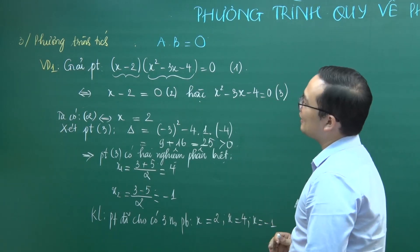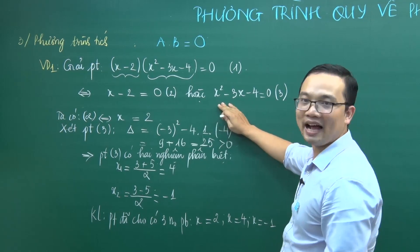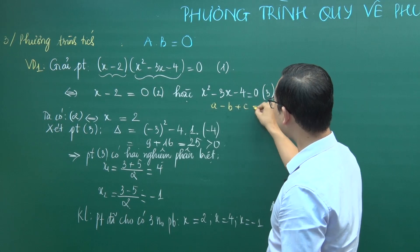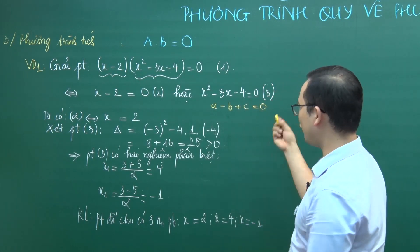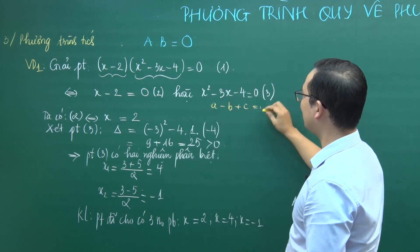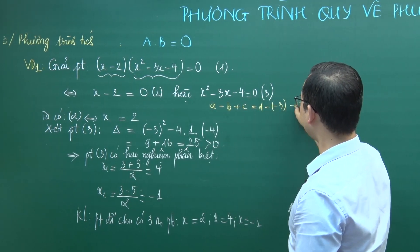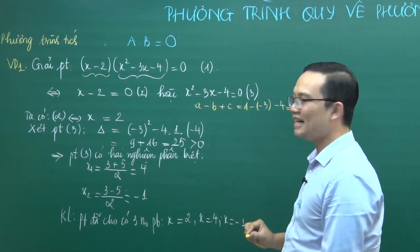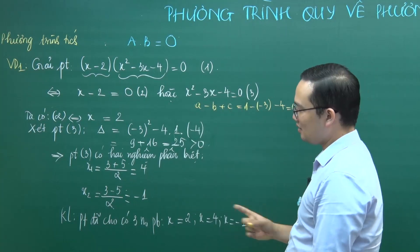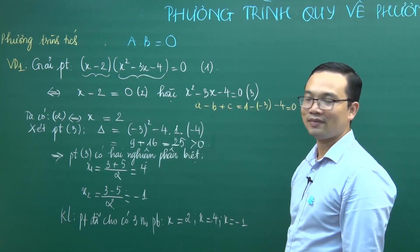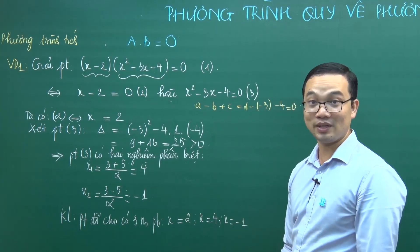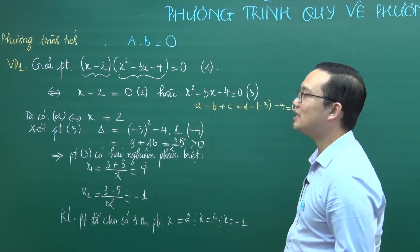Nếu bạn nào tinh ý thì thấy phương trình x² - 3x - 4 = 0 có A - B + C = 1 - (-3) - 4 = 0, nên phương trình có 1 nghiệm bằng -1 và 1 nghiệm bằng -C/A = 4. Kết luận phương trình đã cho có 3 nghiệm phân biệt.